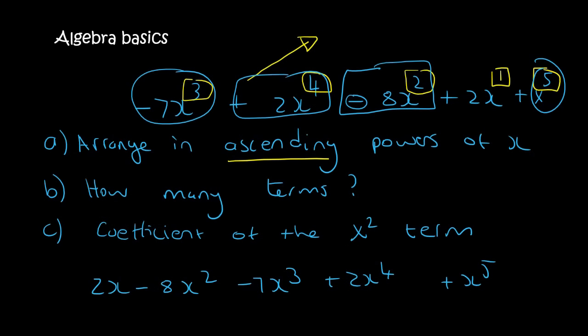The next question. How many terms? Well, that's 1, 2, 3, 4, 5 terms. And then lastly, what is the coefficient? So that's the number in the front of the x2 term. It's going to be minus 8. You must include the sign. And so that will be minus 8. There we go, guys. Thank you for watching.